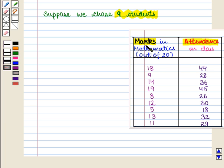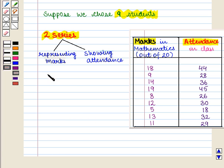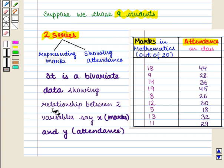One representing marks and the other showing attendance. So, it is a bivariate data showing relationship between two variables.